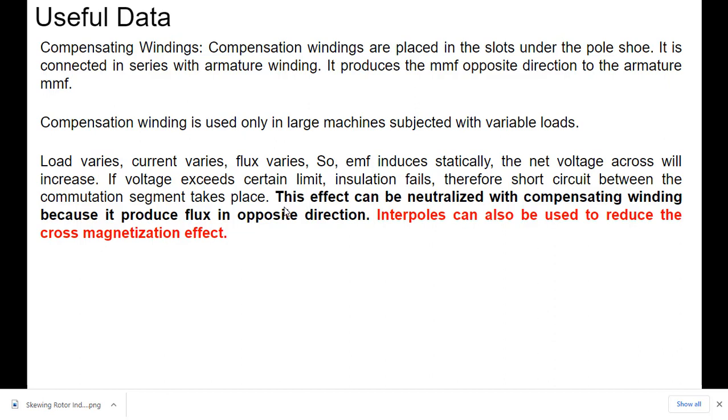This effect can be neutralized with the compensation winding because it produces flux in opposite direction. In this way, compensating windings help to reduce the armature MMF. We can also use interpoles to reduce the cross magnetization effect.